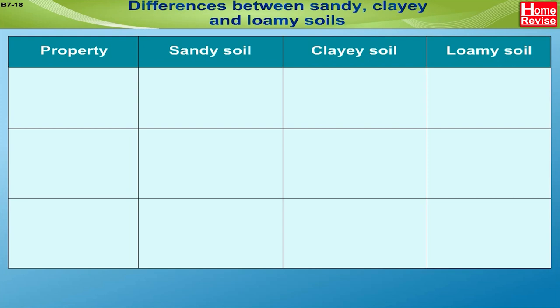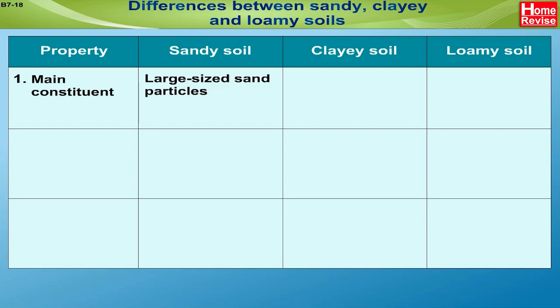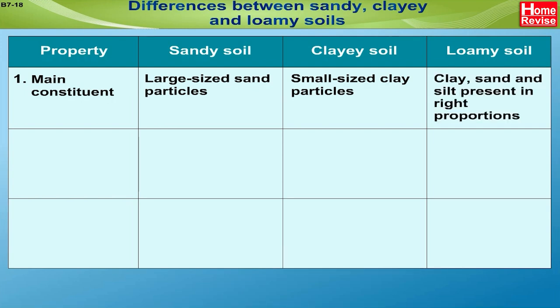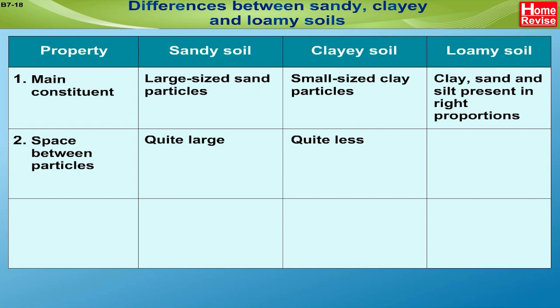Differences between sandy, clayey, and loamy soils. 1. Main constituents: Sandy soil — large-sized sand particles; Clayey soil — small-sized clay particles; Loamy soil — clay, sand, and silt in right proportions. 2. Spaces between particles: quite large in sandy soil, quite less in clayey soil, and sufficient in loamy soil.